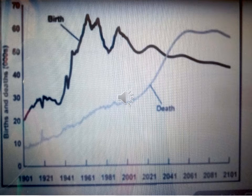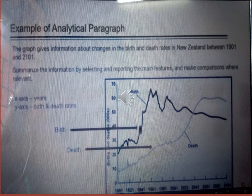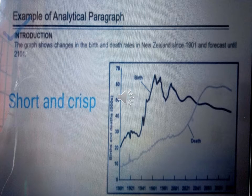On the basis of this graph, we have to write the analytical paragraph. You can see this black line refers to the birth rate and this grey line refers to the death rate. The x-axis shows the years and the y-axis shows the birth and death rate. The graph shows the changes in birth and death rate in New Zealand since 1901 till 2101.